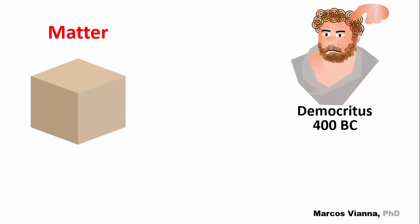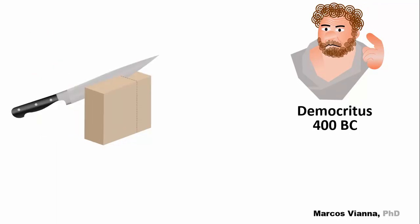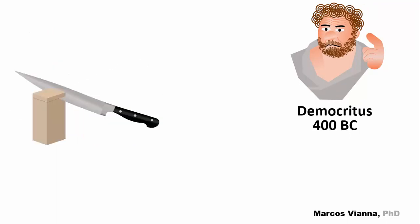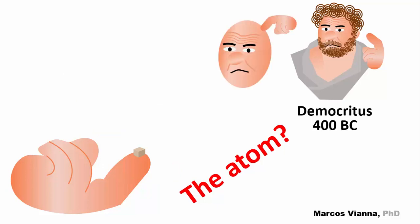The first concept of atom is attributed to Democritus, a Greek philosopher that lived in 400 BC. He imagined that if you were to cut the matter in smaller pieces, and smaller, smaller, smaller, and even smaller, you'd get to a piece that couldn't be made any smaller. However, this would be the atom. According to Mr. Democritus, atoms are tiny, indestructible, and indivisible. But is it really?